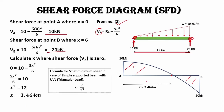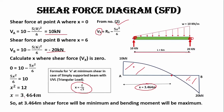We can also calculate the distance where shear force is zero for a triangular load using the standard formula by substituting the length value. At x = 3.464 meters the shear force is zero and the bending moment is maximum.